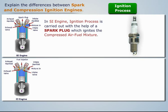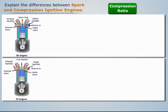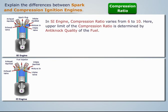In the spark ignition engine, the ignition process is carried out with the help of a spark plug, which ignites the compressed air-fuel mixture. Whereas, in the compression ignition engine, self-ignition occurs due to the high temperature of air because of high compression; here a spark plug and ignition system are not required.